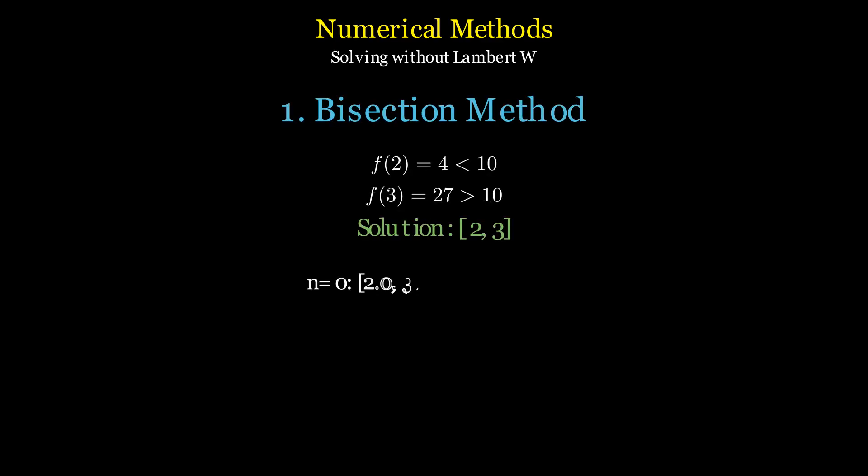Let's also look at how we could solve this purely numerically without knowing about the Lambert W function. The bisection method is simple and reliable. Since f of 2 equals 4 and f of 3 equals 27, we know our solution lies between 2 and 3. We keep halving the interval, narrowing it down step by step until we converge on the answer.